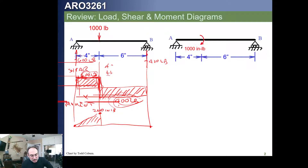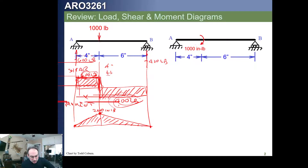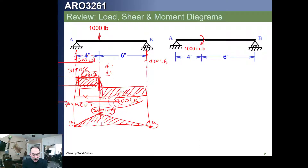Since the shear is constant, the moment has a linear distribution. After we hit 2,400 inch-pounds, we then have a negative shear of 400 pounds. So 400 pounds of negative shear times the 6 inches it acts on removes 2,400 inch-pounds linearly. Looking at the moment diagram, how many values need to be shown? We need to show that the moment at x=0 is 0, the moment at x=10 is 0, and the moment at 4 inches is 2,400 inch-pounds — so three terms. That defines everything; the rest of the magnitudes are defined by the shape.